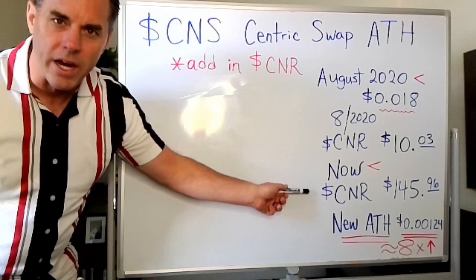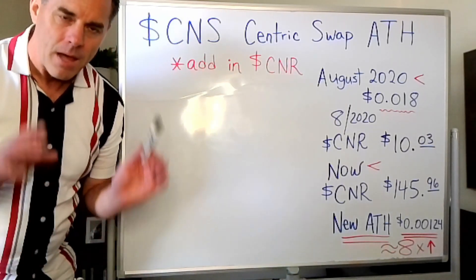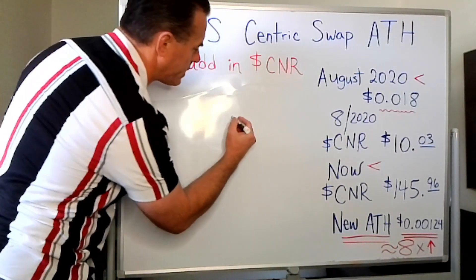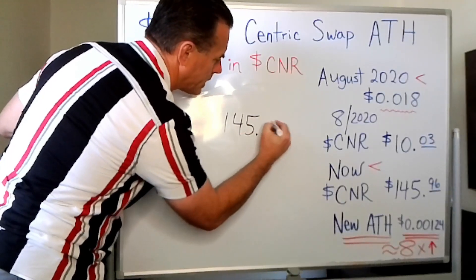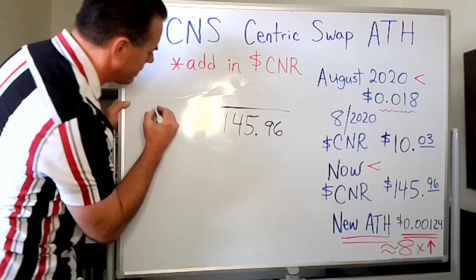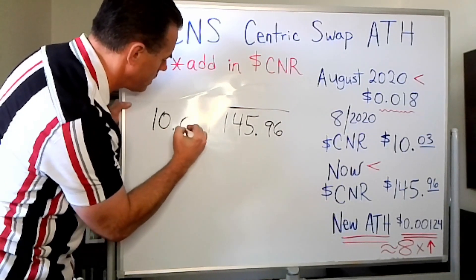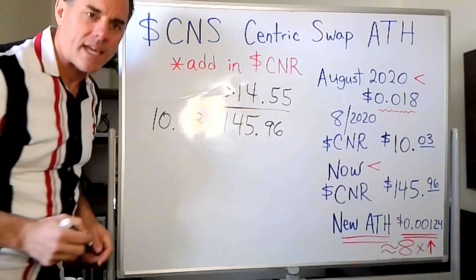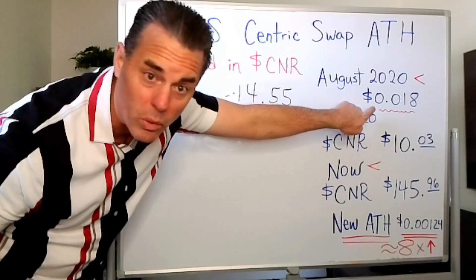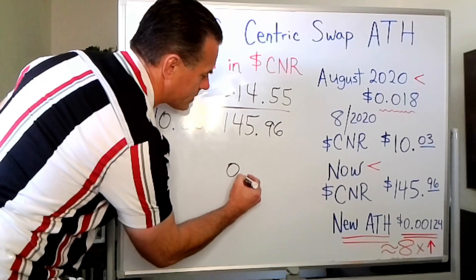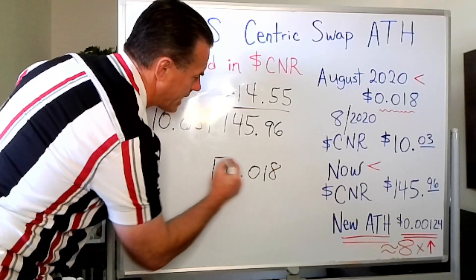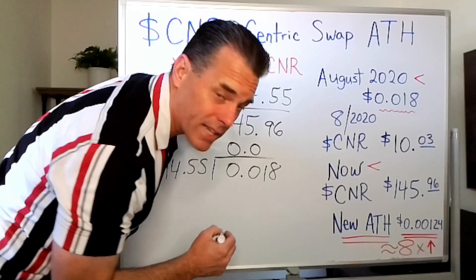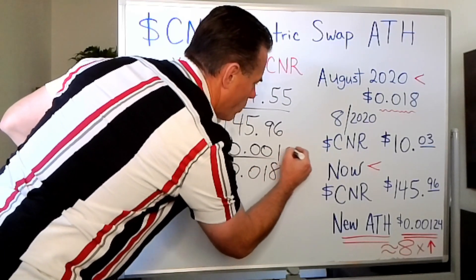Today CNR is at $145.96. This is how we calculate the true all-time high: we take $145.96, divide it by $10.03, and we get 14.55. Then we take that number, 14.55, and we divide it into 1.8 cents — so 0.018 divided by 14.55 — and we get this new all-time high number for CNS: 0.00124.